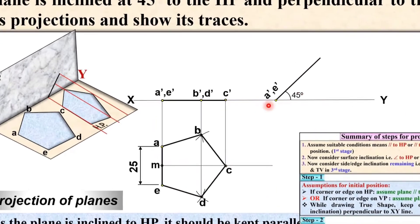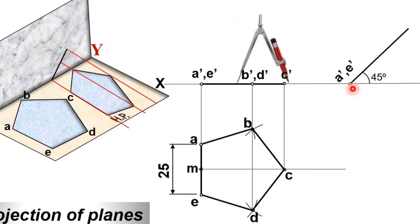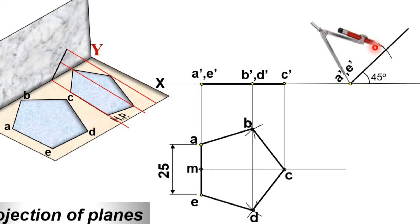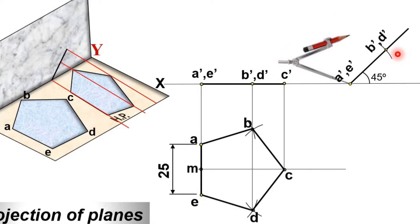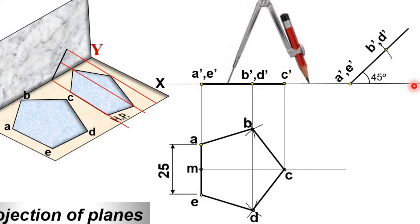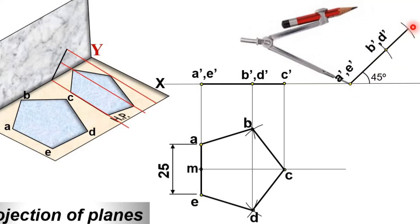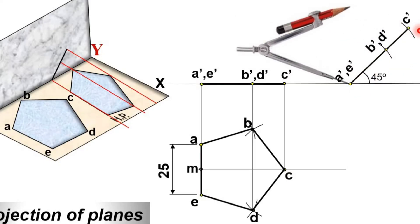Now transfer the distances using the compass. Set the radius equal to the first-stage distance, take A as reference, and draw the arc to get B-dash D-dash. Similarly transfer the next distance with the compass, taking A as the center, and draw the arc to get C-dash.